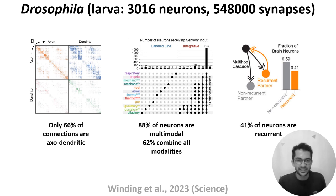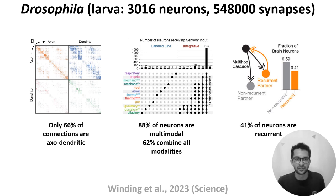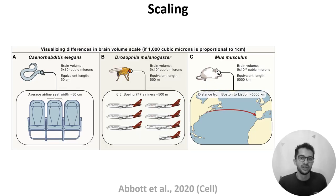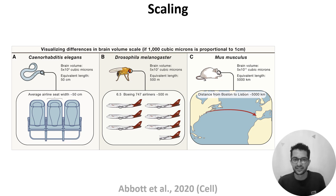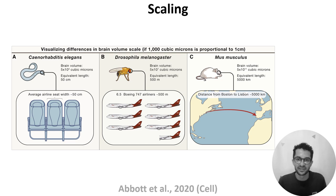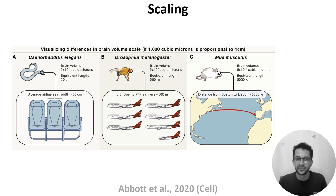Stepping back a bit, we may expect that animals with more complex behaviours, like us, may have very similar connectomes to the fly and the worm but simply scaled up, or we could expect additional features. Either way, it would be great if we could obtain larger connectomes to compare. The problem is that brain volume scales very rapidly. Going from a worm to a mouse is a 10-million-fold increase in brain volume. To visualise that: if 1000 cubic microns of brain volume is proportional to a one centimetre linear distance, then the worm brain is equivalent to the width of a seat on an aeroplane, the adult fruit fly brain is equivalent to the length of six and a half aeroplanes, and the mouse brain is equivalent to the distance between Boston and Lisbon. So clearly obtaining larger connectomes presents huge challenges in terms of data acquisition, data storage, and analysis.